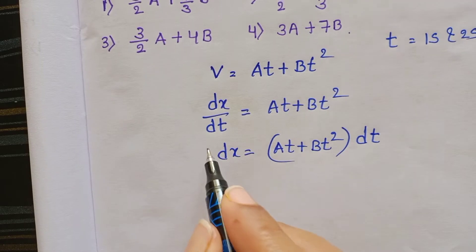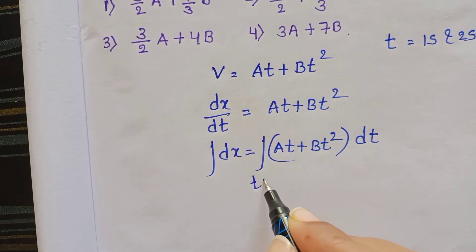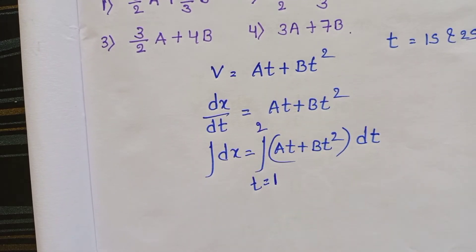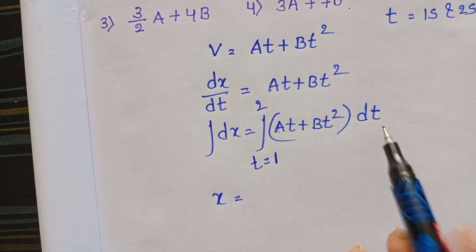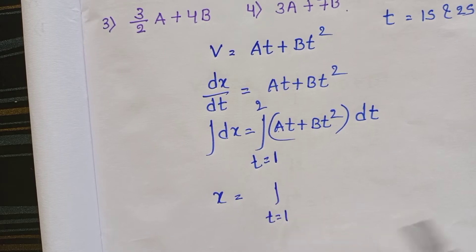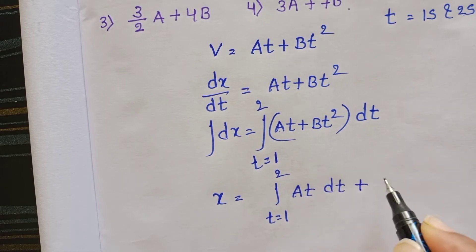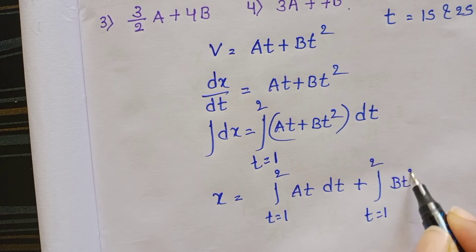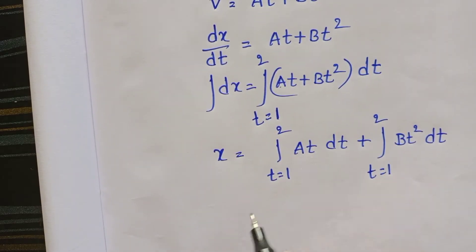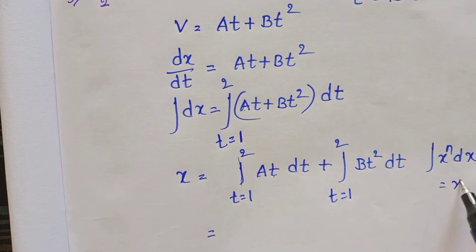Integrate on both sides with time limits from t = 1 second to t = 2 seconds. So x equals the integral from 1 to 2 of at dt plus the integral from 1 to 2 of bt squared dt. Using the power rule: integral of x to the n dx equals x to the n+1 divided by n+1.